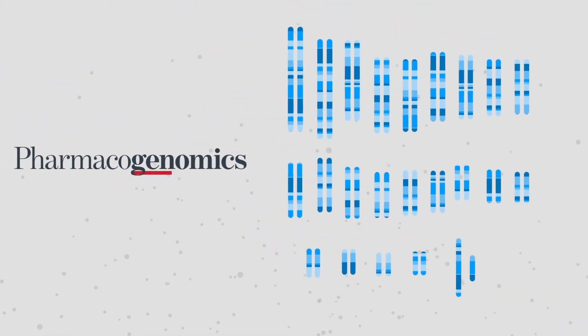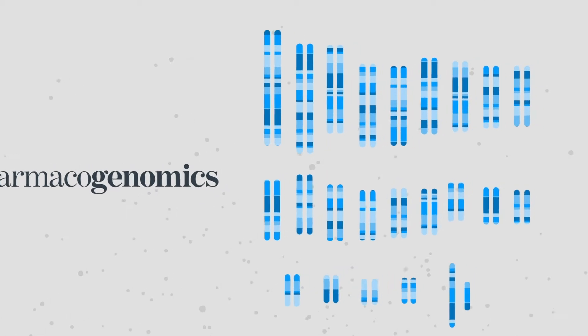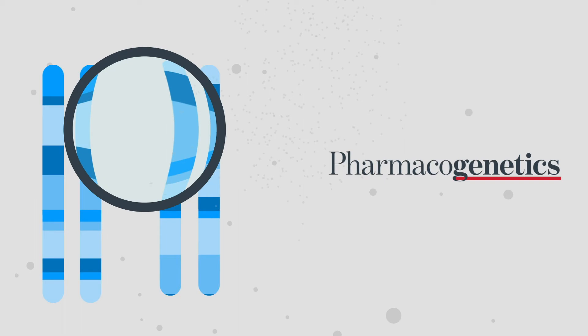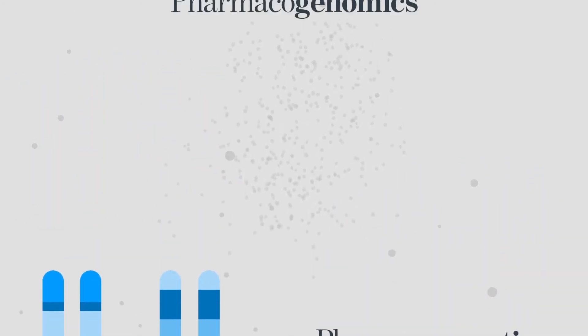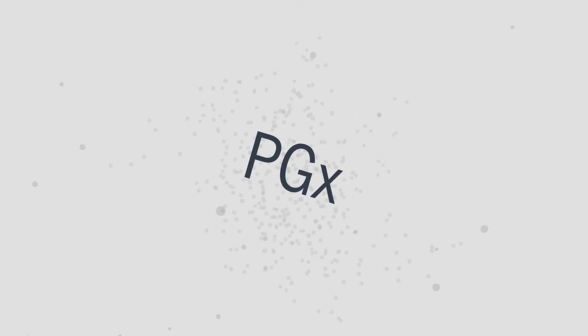Pharmacogenomics refers to analyzing a person's entire genome, whereas pharmacogenetics refers to analyzing a single gene or set of genes. This difference is mostly technical, and industry players use these terms interchangeably.